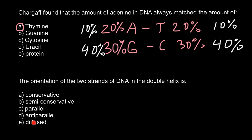So we have to choose between answer C: parallel, and D: anti-parallel. If we have a double-stranded DNA with the 5' end here, on the other end we would have the 3' end, and the second strand would have the 5' end on one side and the 3' end on the other. So double-stranded DNA is anti-parallel — that is answer D.